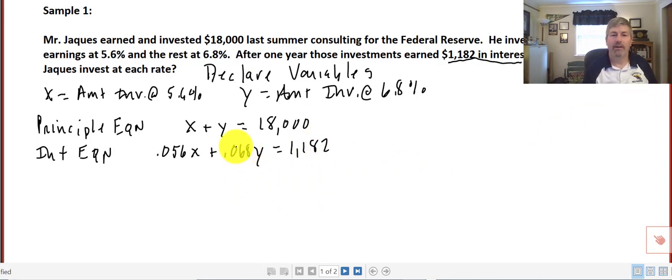Now we've got our two equations in two variables. I don't like the decimals in the interest equation, so I'm going to multiply that by $1,000 to get rid of the decimals. We end up with 56x plus 68y equals $1,182,000. Those are equivalent equations. Following our process now, we want to drop out one of the variables. We need equal and opposite coefficients on either x or y.